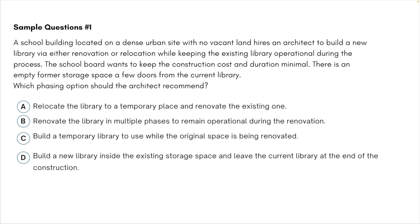Which phasing option should the architect recommend? A: relocate the library to a temporary place and renovate the existing one. B: renovate the library in multiple phases to remain operational during the renovation. C: build a temporary library to use while the original space is being renovated. D: build a new library inside the existing storage space and leave the current library at the end of the construction.